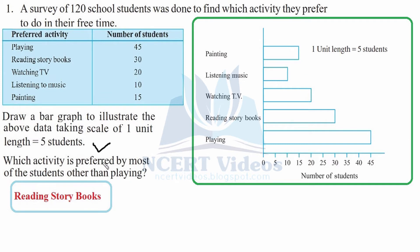This is how we make the bar graph. Now, which activity is preferred by most of the students other than playing? Playing is liked by the maximum number of students. The next activity is reading storybooks, having 30 students. This is your question number one.